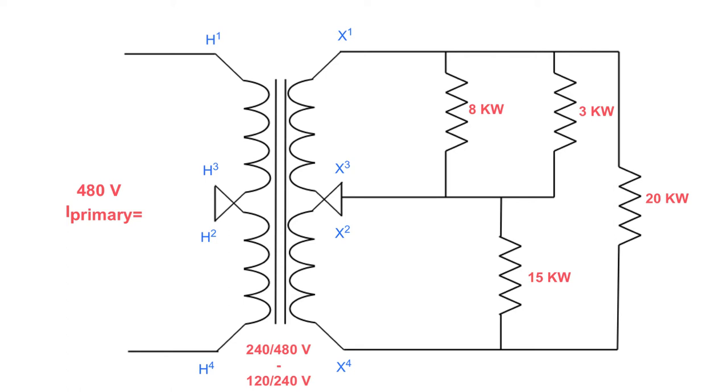The easiest way to determine that is remembering the rule that KVA in, whatever this guy is, is KVA out, which is this side here. Which means to say that whatever this side of the transformer is asking for, this side here has to give.